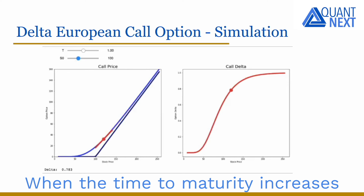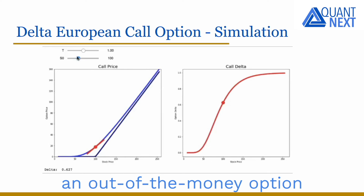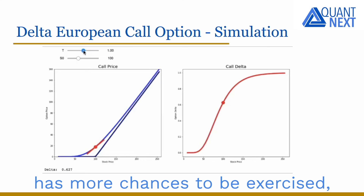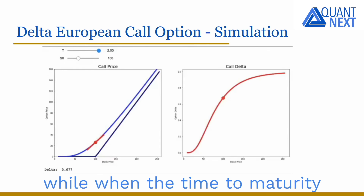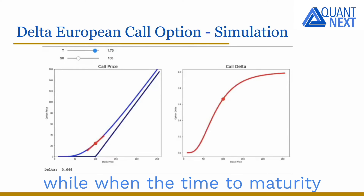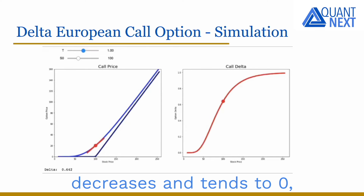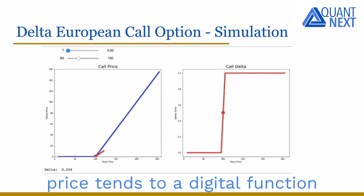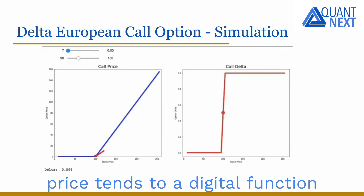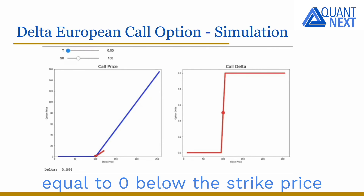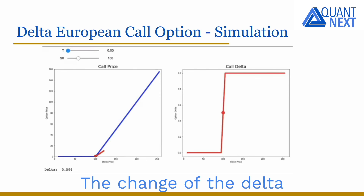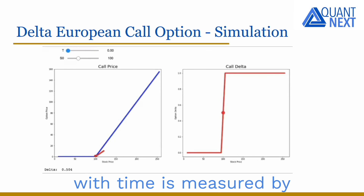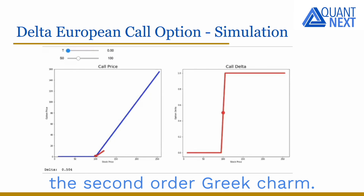When the time to maturity increases, an out-of-the-money option has more chances to be exercised and its delta increases. When the time to maturity decreases to 0, the delta, as a function of the stock price, turns to a digital function equal to 0 below the strike price and plus 1 above. The change of the delta with time is measured by the second-order Greek charm.